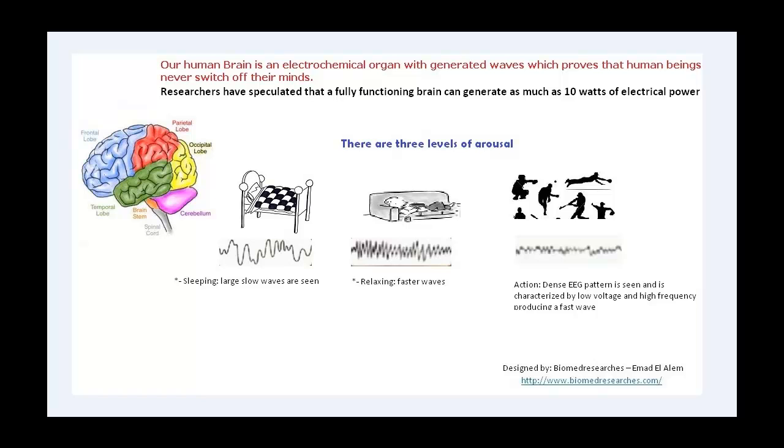Researchers in 1930s and 40s identified several different types of brain waves. Traditionally, these fall into four types which we will talk about later on. Our human brain is an electrochemical organ with generated waves which proves that human beings never switch off their minds.